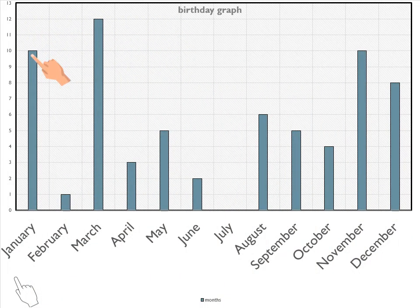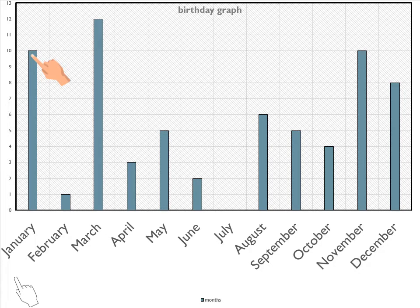Now we move to our birthday graph. I will ask some questions. How many students were born in January? Ten students. How many students were born in February? One student. When I ask 'how many,' the answer must be a number.